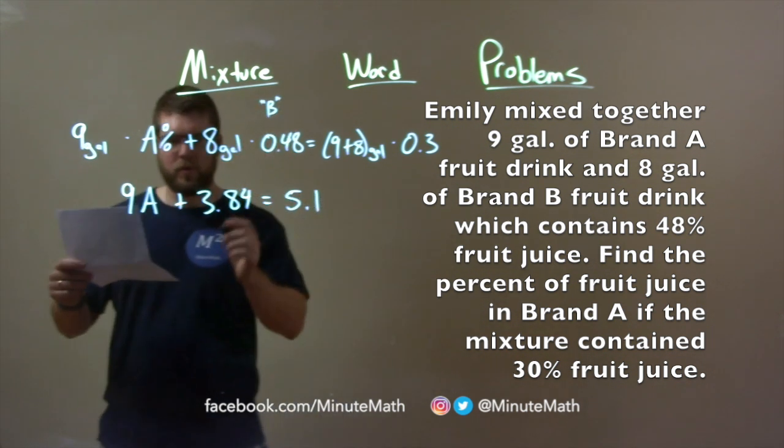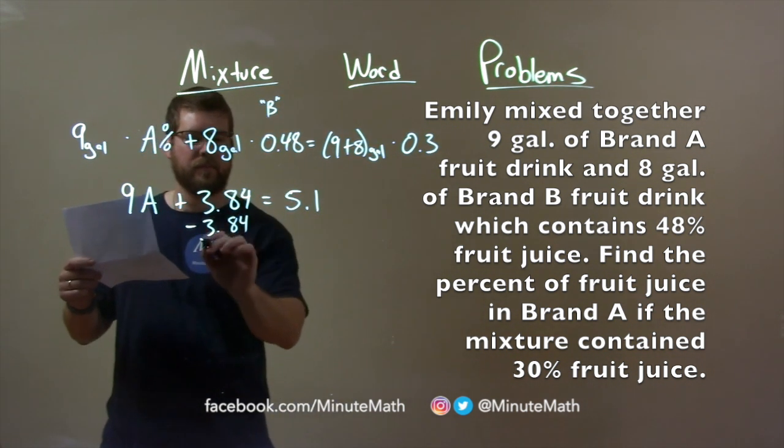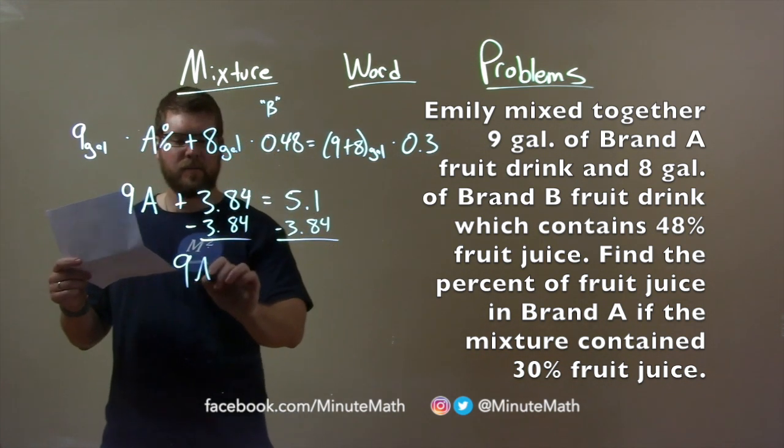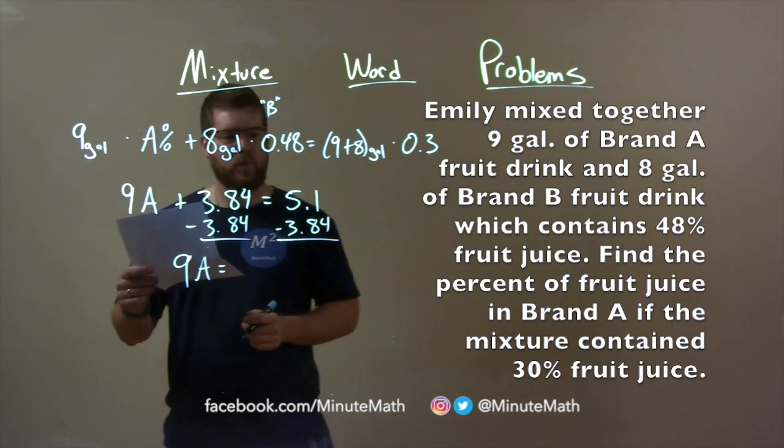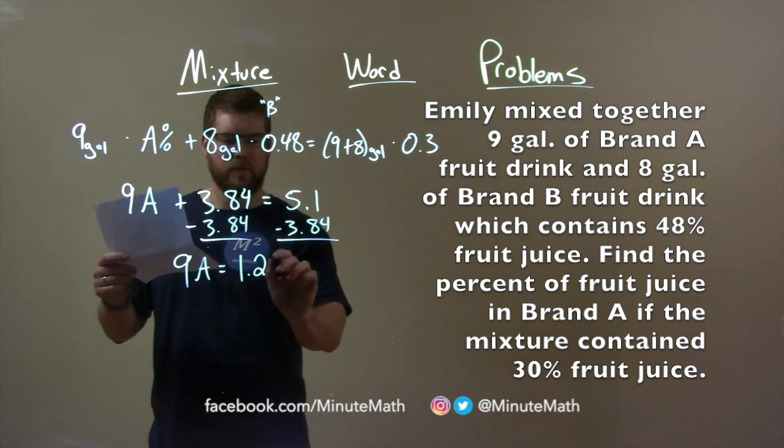Now, we're solving for A. Subtract the 3.84 to both sides, and we have 9 times A is equal to 5.1 minus 3.84, which is 1.26.